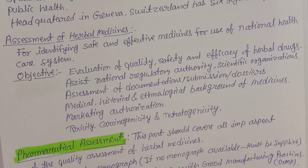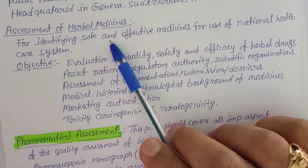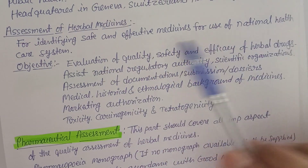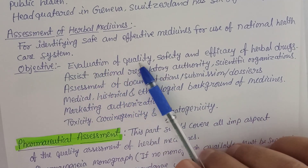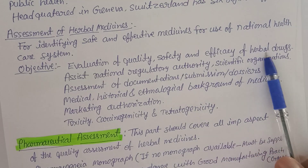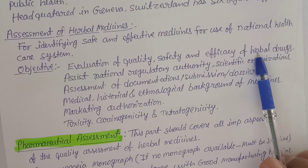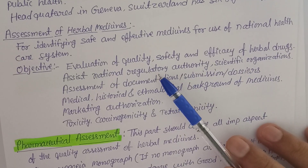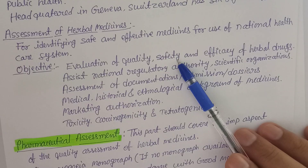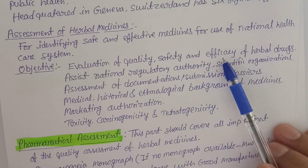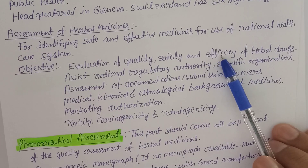The objectives for assessment of herbal medicine include: first, evaluation of quality, safety, and efficacy of herbal drugs. Quality is important because these drugs come from natural sources and are used for therapeutic purposes. Safety means they should not have toxic or adverse effects, and efficacy refers to their effectiveness — whether anti-diabetic, anti-inflammatory, or anti-malarial.